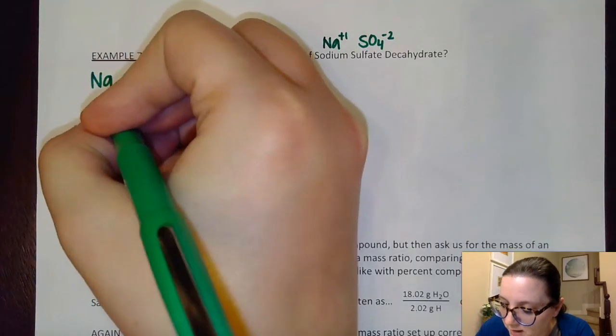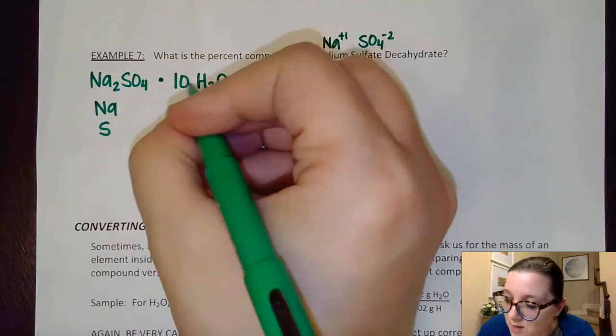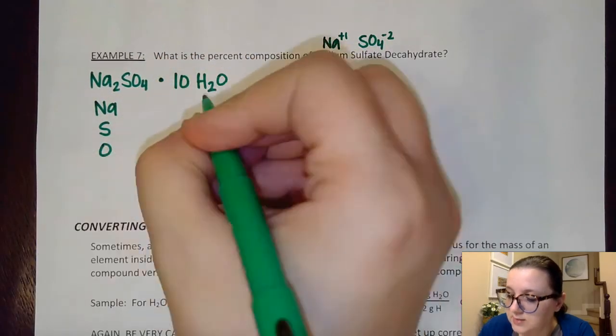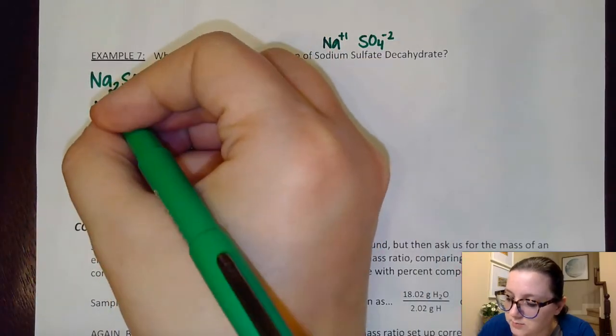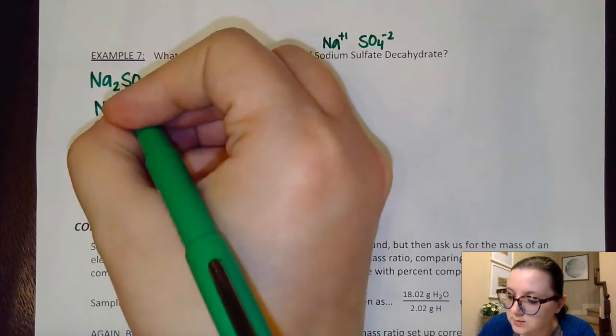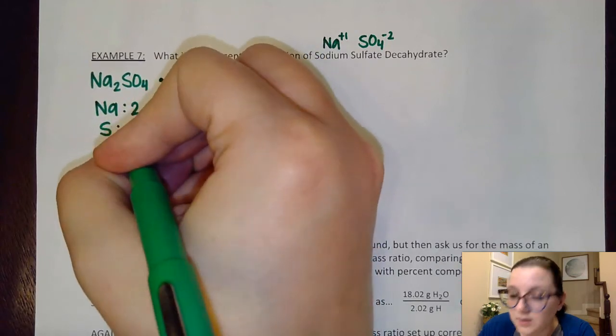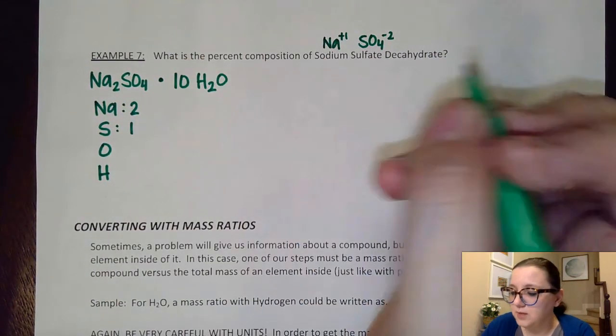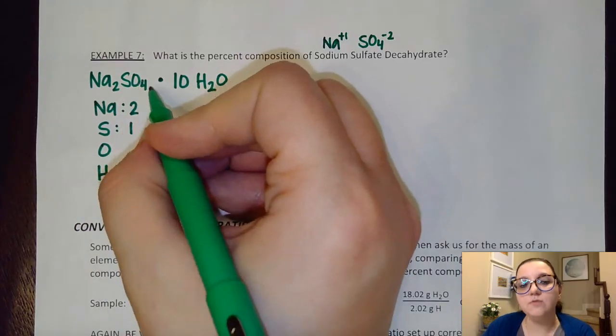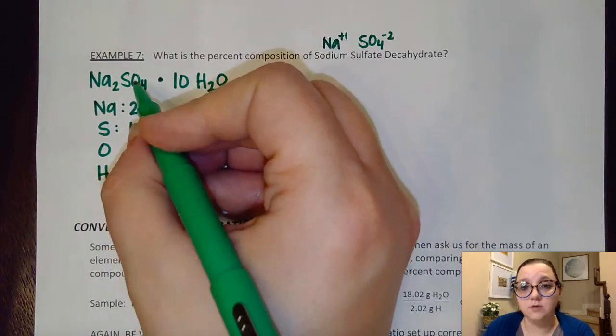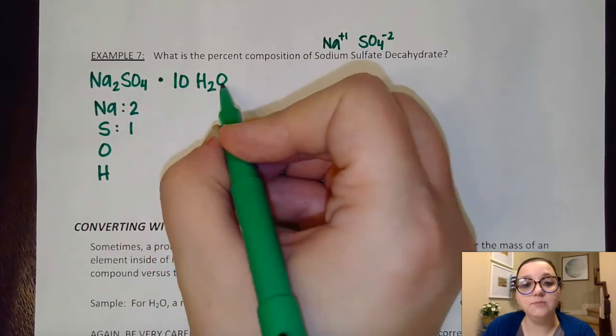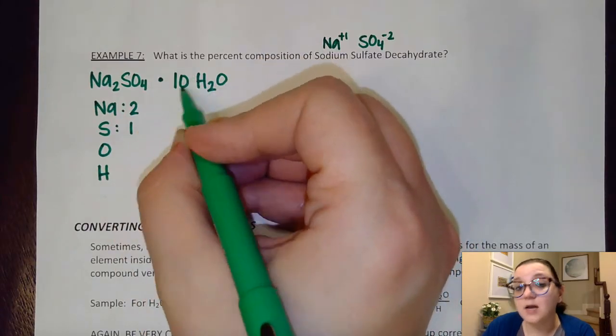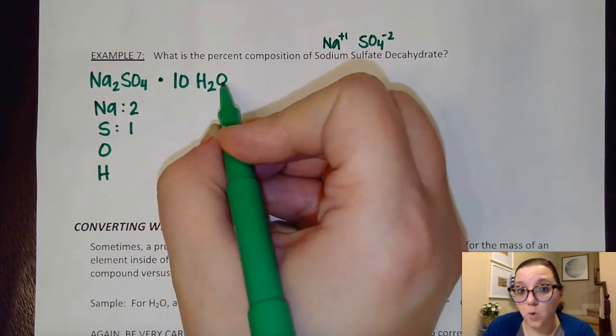So when I'm doing my element counts here, I'm going to have sodium, sulfur. I'm going to have oxygens in two different places. And then we're also going to have our hydrogens. So sodiums, I'm going to have two. Sulfur, we're going to have one. Oxygens, we've got to be really careful. I have four coming from the Na2SO4, from the sodium sulfate part. But then I have another 10 times one. So that big number, that coefficient in front, will multiply that one. So that means I'm actually going to have a grand total here of 14 of those oxygens.